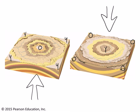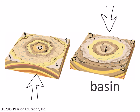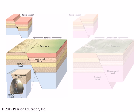With the structural dome, the oldest strata are in the middle and the youngest are on the edges. With the structural basin, the youngest strata are exposed in the middle and the oldest strata are on the edges. If we add the strike and dip symbols, you can see how the strata of the structural dome dip away from the center, and the strata of the structural basin dip toward the center.